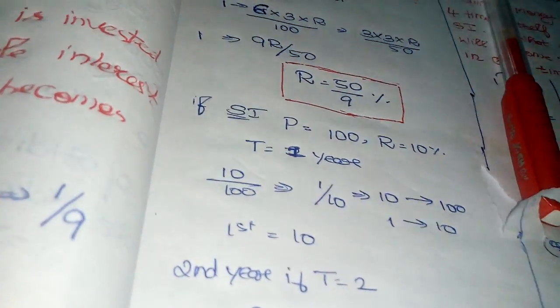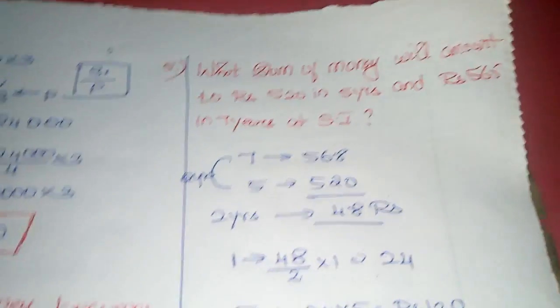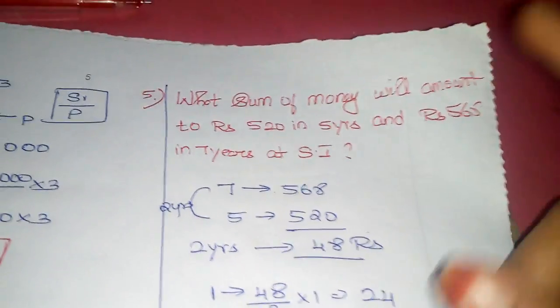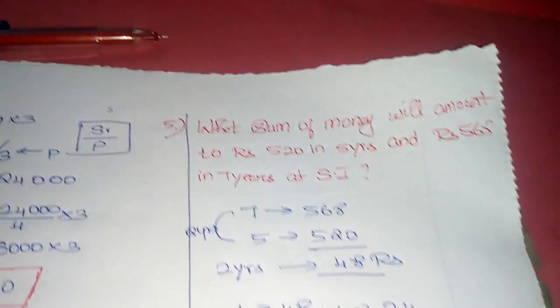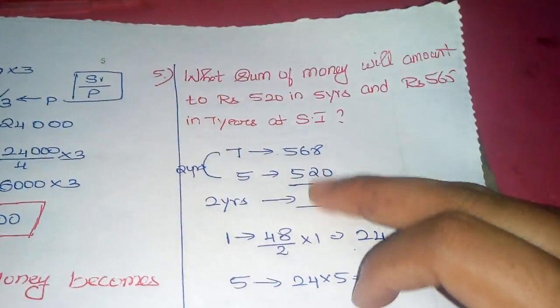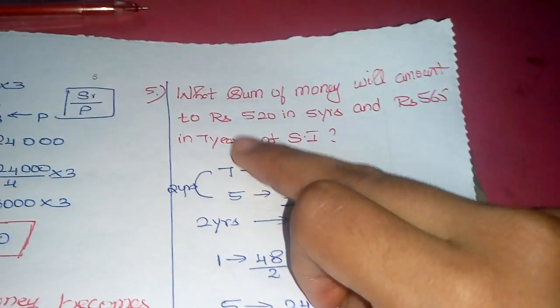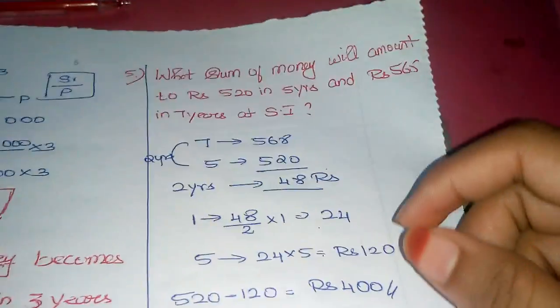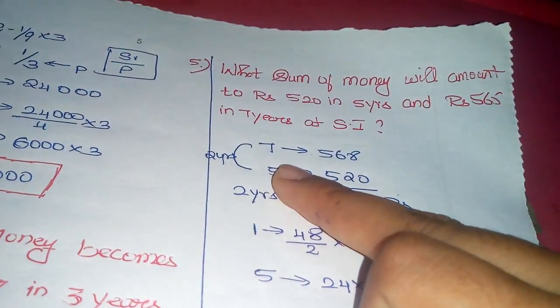Very important model: What sum of money will amount to 520 in 5 years and 565 in 7 years at simple interest? 7 parts give 565 and 5 parts give 520. Different years is 2 years, difference in rupees is 45 rupees.